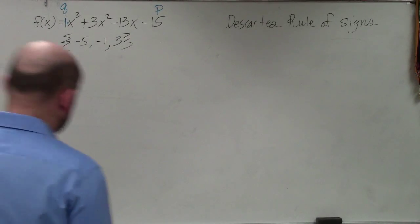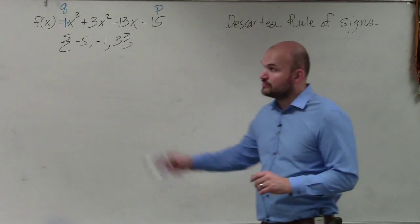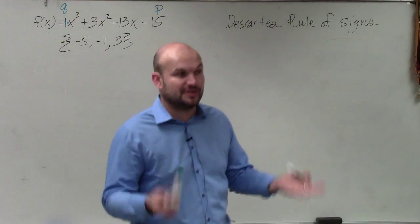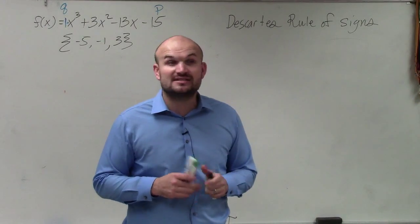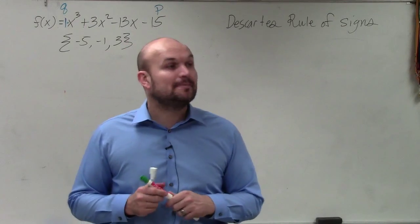So Descartes' rule of signs, basically what Descartes' rule of signs tells us is not only what the rational zero test tells us about the possible rational zeros. Descartes' rule of signs tells us how many real positive, real negative, and complex zeros we have.